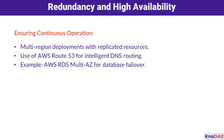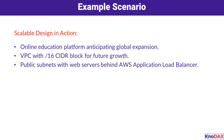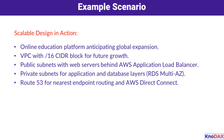Let's bring it all together with a real-world example. Imagine an online education platform expecting rapid growth. The platform starts with a /16 CIDR block for its AWS VPC to ensure room for future expansion. Public subnets host web servers behind an AWS Application Load Balancer, while private subnets handle application and database layers with Multi-AZ RDS deployments. Route 53 routes traffic to the nearest regional endpoint, ensuring a seamless experience for users worldwide. This setup is both scalable and resilient.